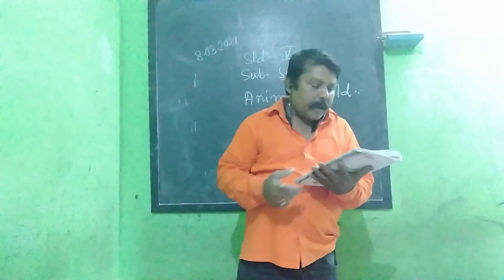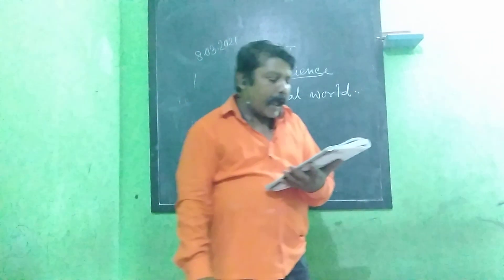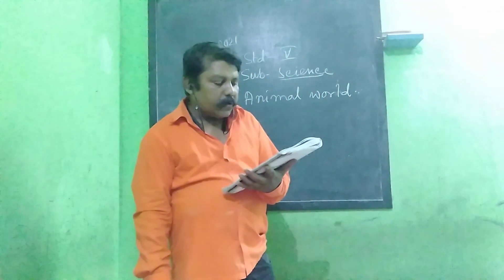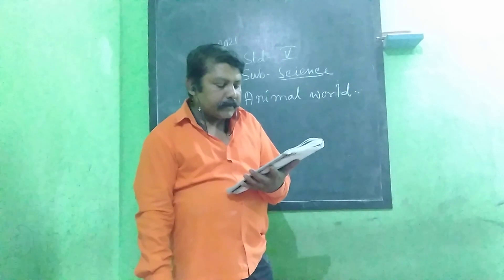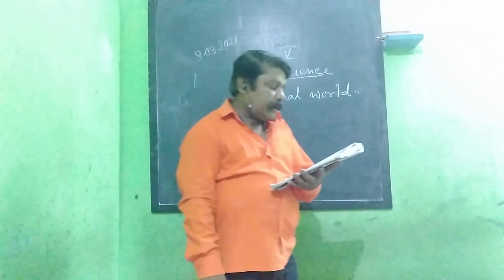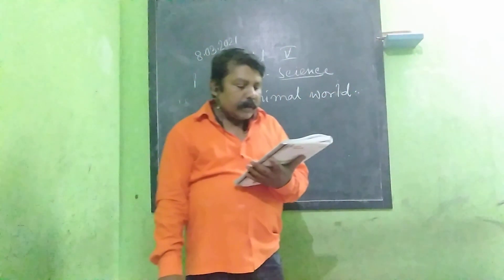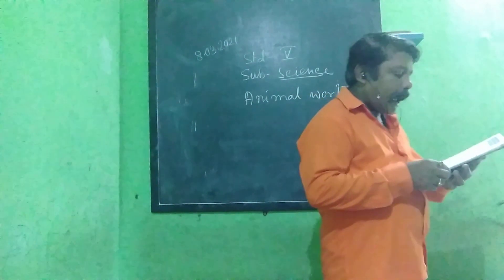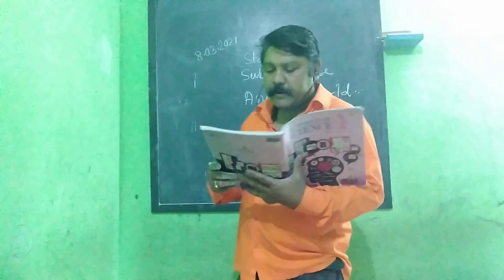Surrounding and needs — called adaptation. Adaptation according to habitat. The place where the animal lives is known as its habitat. An animal is most comfortable in its habitat as it finds its food, shelter. Different animals have adapted themselves to live in different types of habitat.